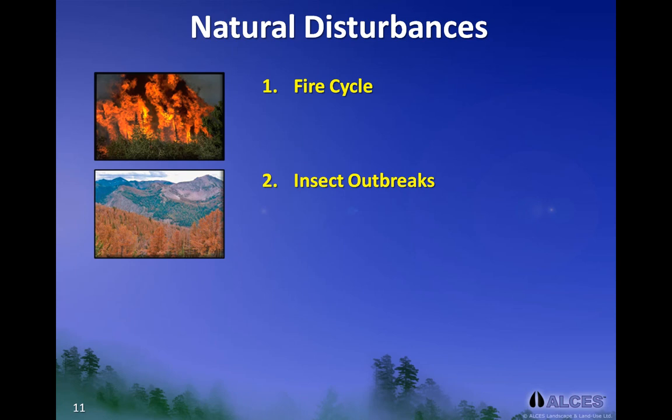Consequently, for a landscape model to simulate forested habitat changes over time, it needs to have basic information on how frequently a forested area will burn. This information describing the fire cycle is called the fire return interval, and for the northeast Yukon study area, the return interval was estimated to be about 100 years.